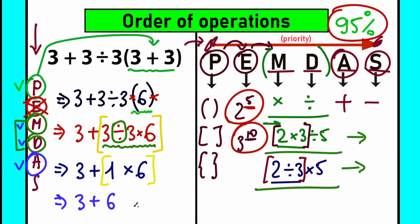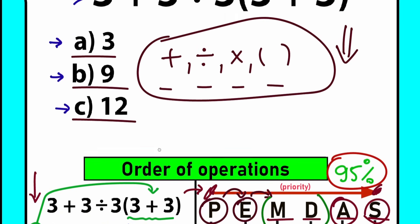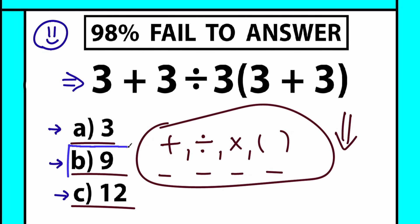Finally, we complete the multiplication and division part, and we're left with addition. We have 3 plus 6 equals 9. We don't have subtraction here, so we can cancel that step. Our correct answer is 9. Going back to our options — we have option 9 right here. If you chose the correct answer 9, you can be proud of yourself for solving this question absolutely correctly.